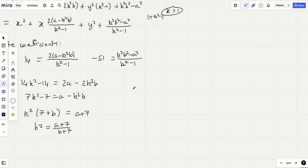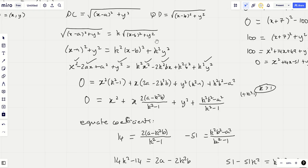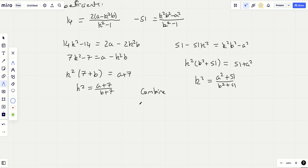We can do that because k is bigger than 1, and you do want to check that you're not dividing by zero. So I get an x², I get an x times by 2(a-k²b)/(k²-1). And then I get a y², and then I get this ugly business on the end, (k²b²-a²)/(k²-1). Now the reason I'm doing that is because I can now use the principle of equating coefficients. So 14 should equal 2(a-k²b)/(k²-1). But likewise, -51 equals (k²b²-a²)/(k²-1).